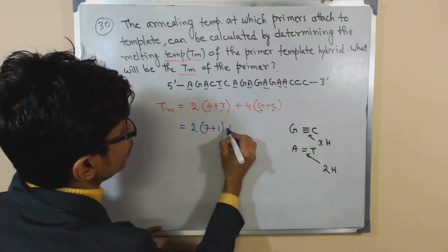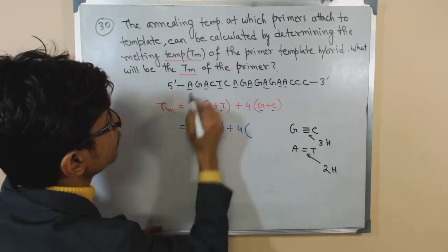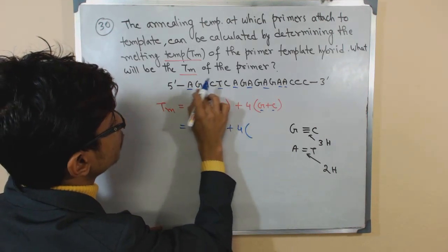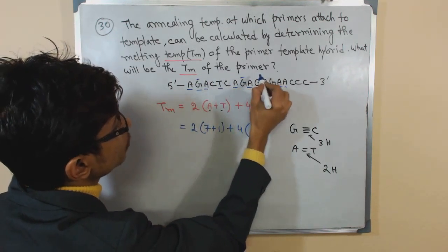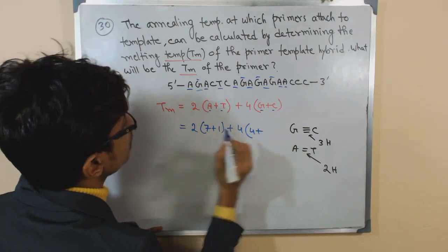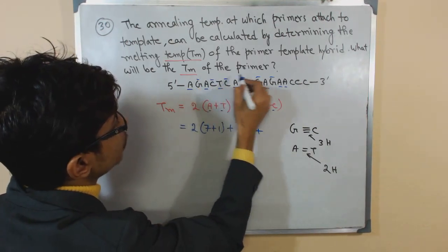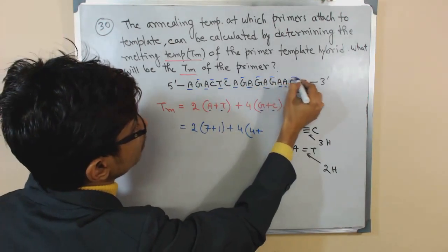Plus 4 multiplied by G. Let me count G: 1, 2, 3, 4. So 4G plus number of C: 1, 2, 3, 4, 5.